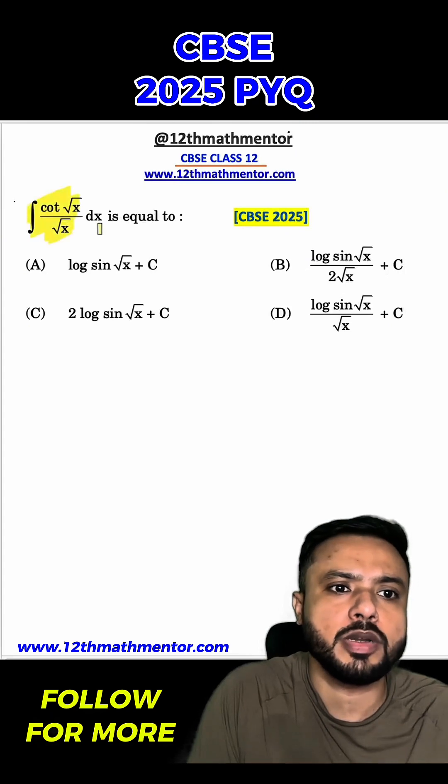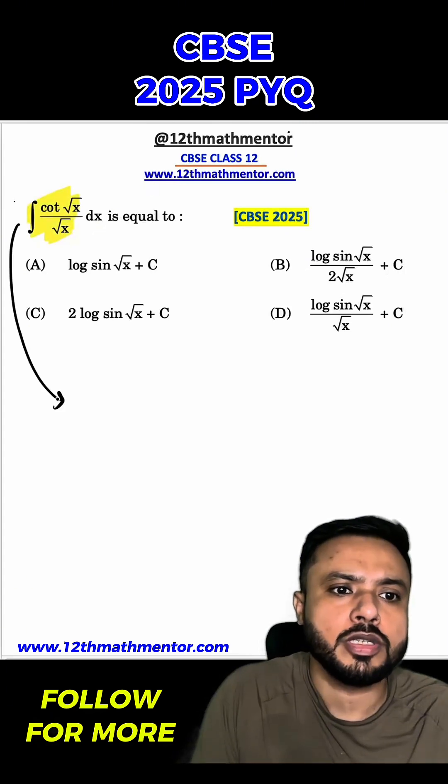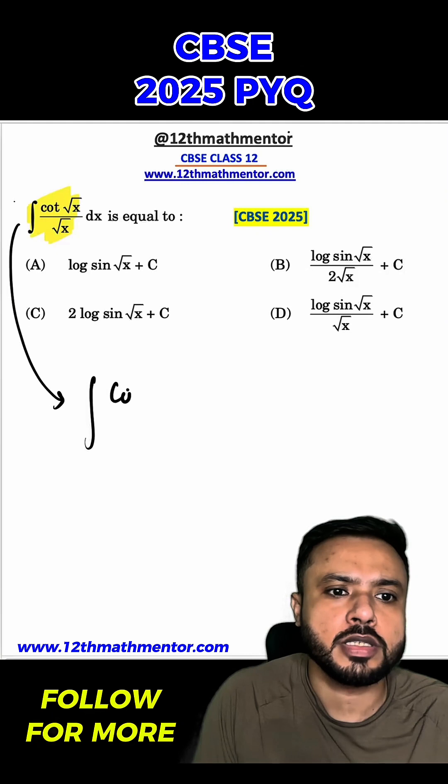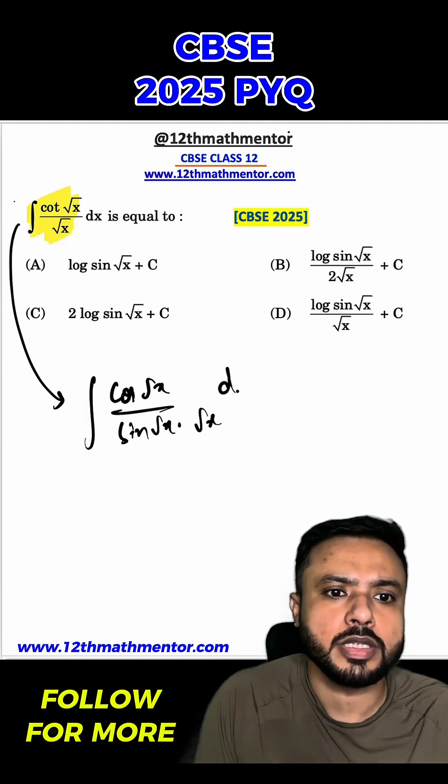So in this question we have to integrate cot of root x by root x with respect to dx. To solve this integral, I'm going to write cot of root x as cos of root x by sin of root x into root x dx.